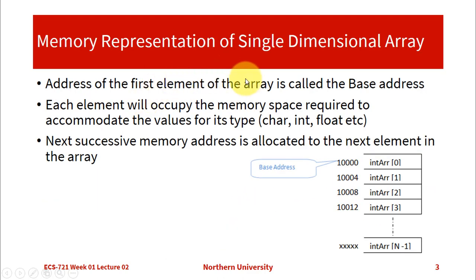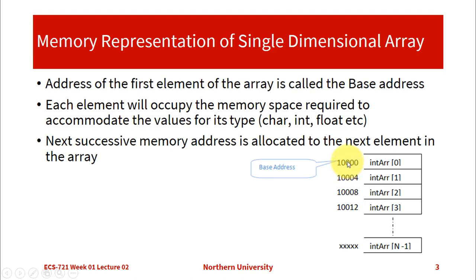Memory representation of a single dimensional array: the address of the first element of the array is called the base address, as you can see in this image. Each element occupies memory based on the data type. So for example, if this is an integer array, the first element at address 10,000 will occupy four bytes. And similarly, in the next consecutive address, which is 10,004 — the reason is that 10,000 is the address of the first location but it occupies four bytes: 10,001, 10,002, 10,003 — four bytes there.